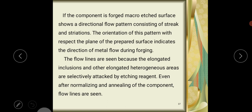If the component is forged, the macro etched surface shows a directional flow pattern consisting of streaks and striations. The orientation of this pattern with respect to the plane of the prepared surface indicates the direction of metal flow during the forging. The flow lines are seen because the elongated inclusions and other elongated heterogeneous areas are selectively attacked by the etch reagent.